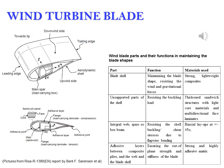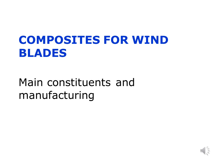The flapwise load is caused mainly by wind pressure, while the edgewise load is caused both by gravitational forces and torque load. The biggest edgewise bending moment is at the blade root.